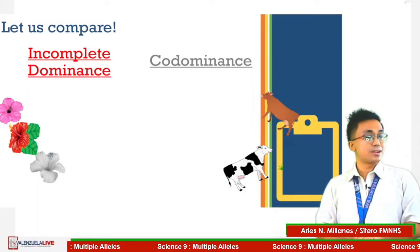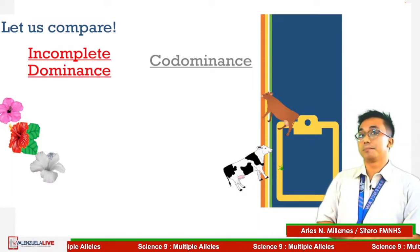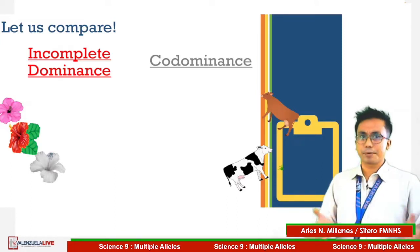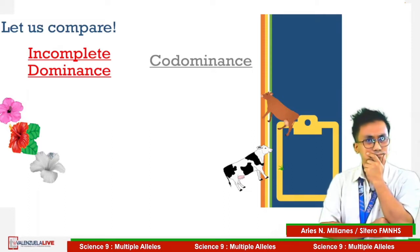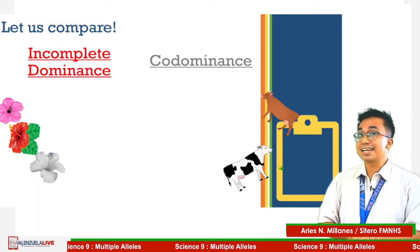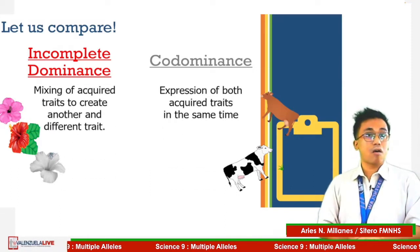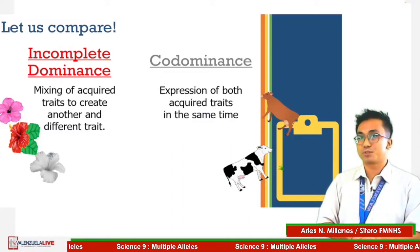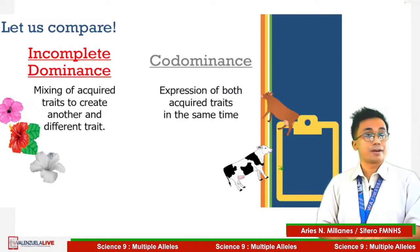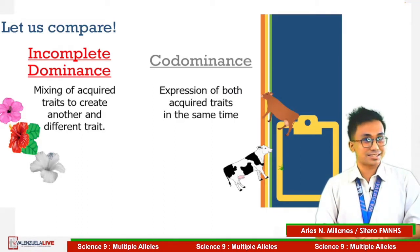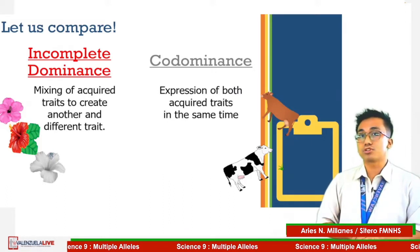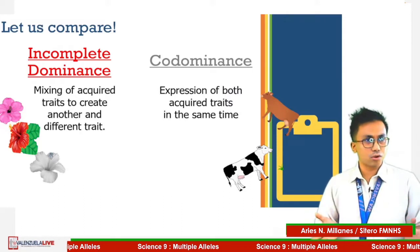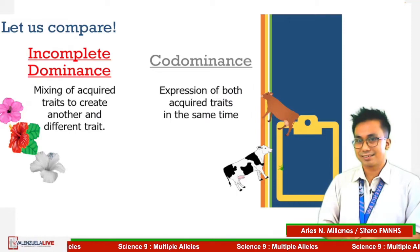We also learned last time the way of solving genetic problems under incomplete dominance and co-dominance. What are the differences of the two? When we say incomplete dominance, it is a mixing of acquired traits that leads to the creation of another form of traits. In the case of co-dominance, instead of mixing, both traits are seen or expressed at the same time.